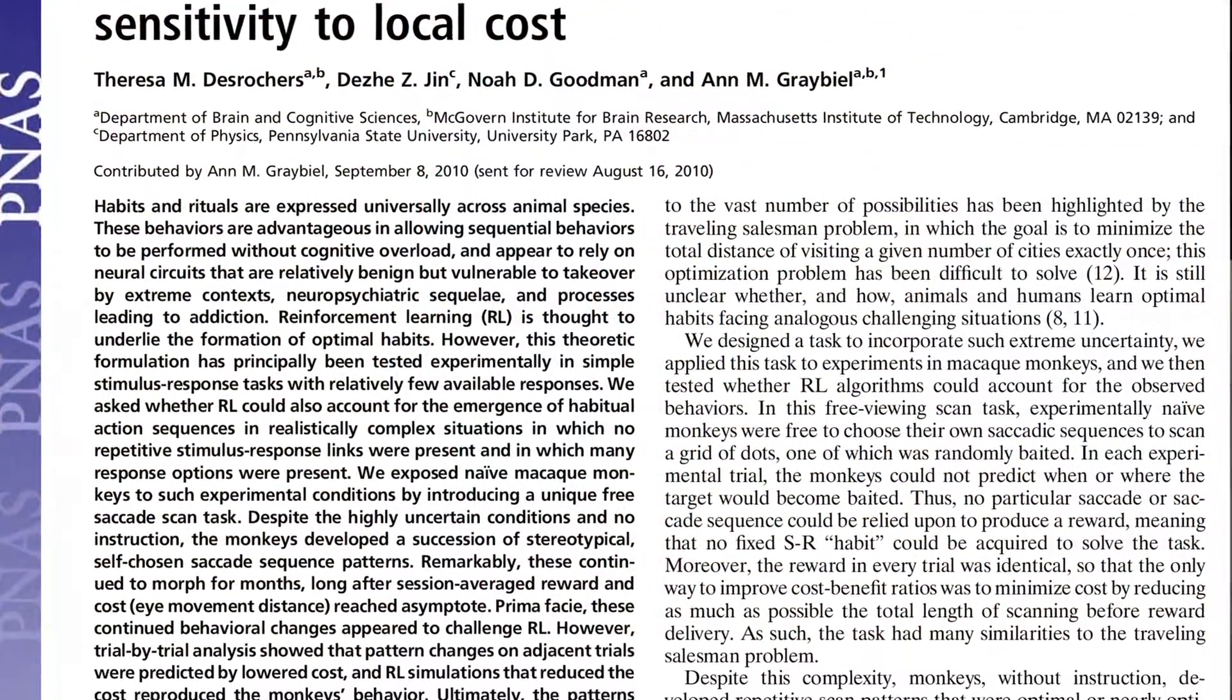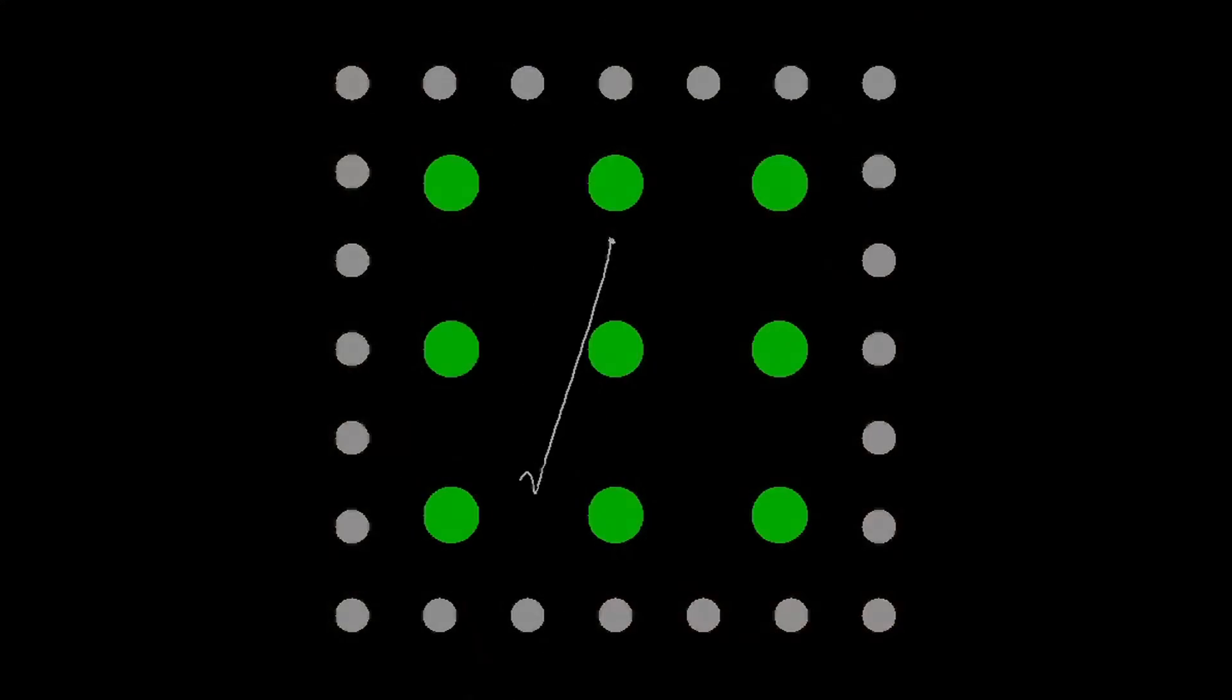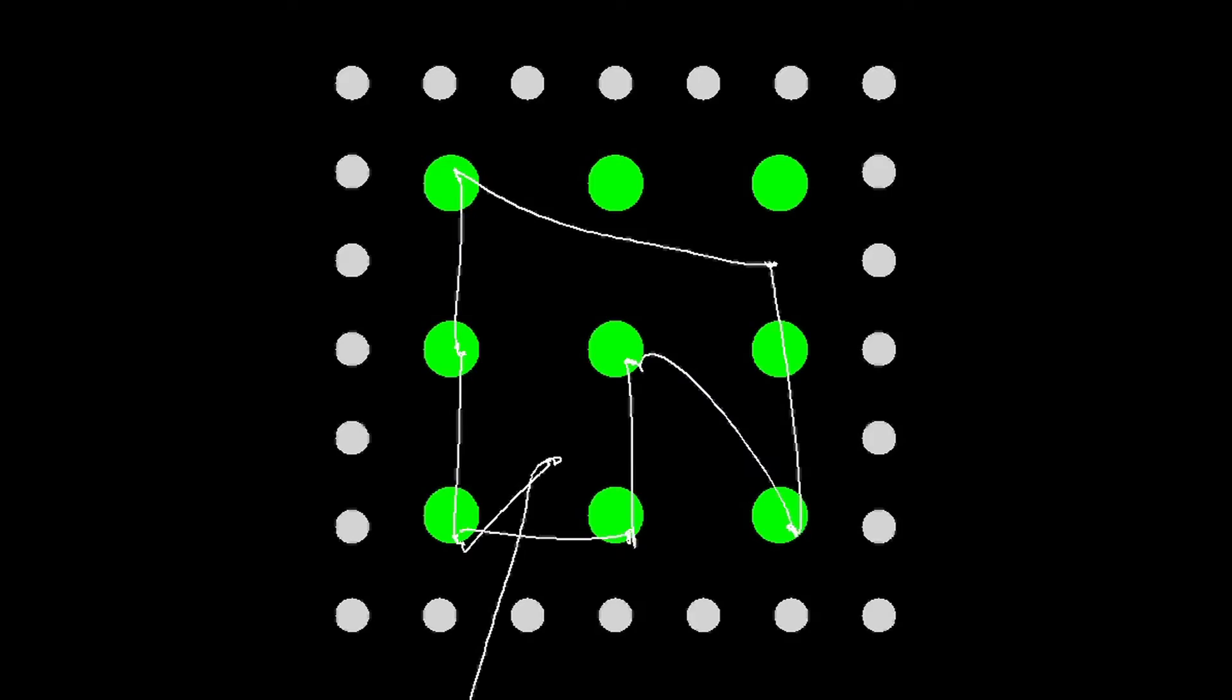Previously with the same set of animals we had done an in-depth look at their behavior and found that it was a notion of cost that could actually drive the habit formation. Specifically what cost is for these animals is the total distance that their eyes travel as they're forming their own pattern. When we recorded that's one of the first things that we were looking for.